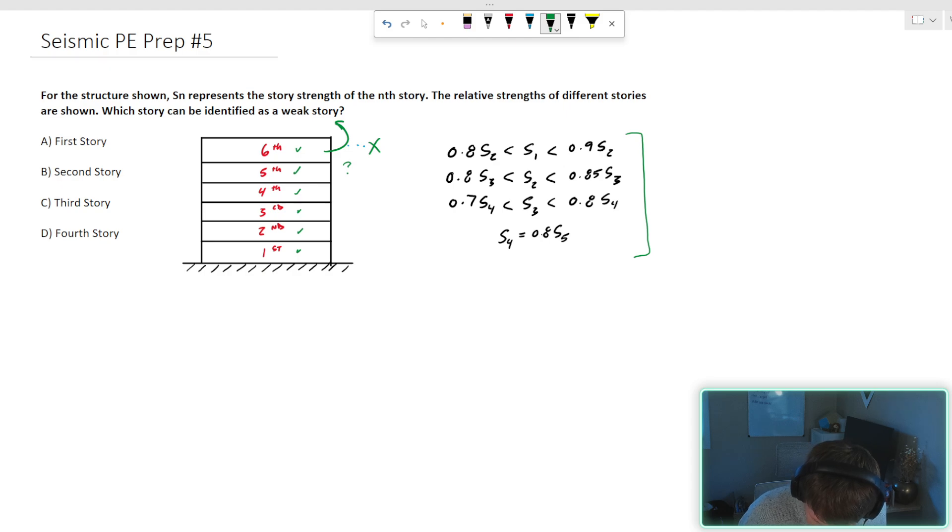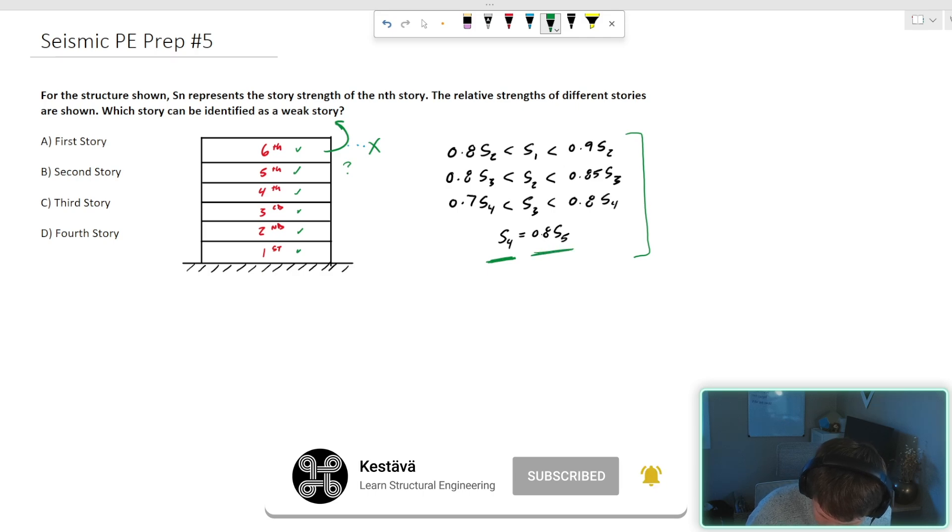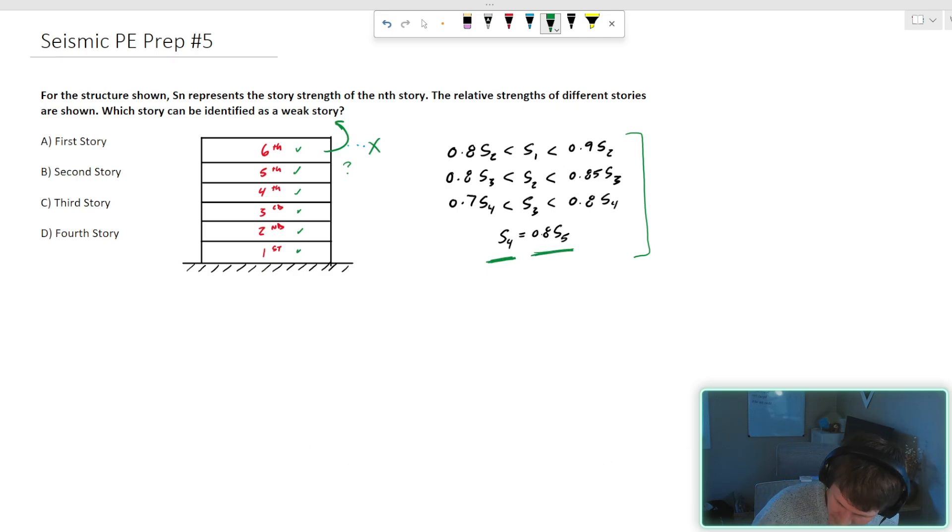Fourth floor. What do we have? We finally got some juicy criteria here. Well, the strength of the fourth floor is equal to 80% of the strength of floor five. So if floor five had a strength of one, S four would equal 0.8 times one, which would equal 0.8. So that is 80% of the strength of story five. We're right on the line there, but it only says less than so story four ekes out this time and it is not a weak story.